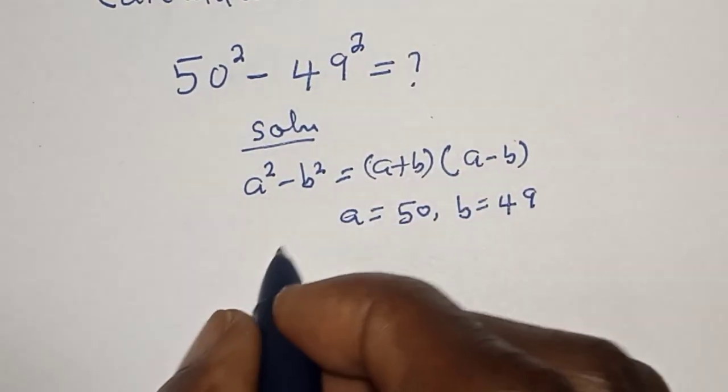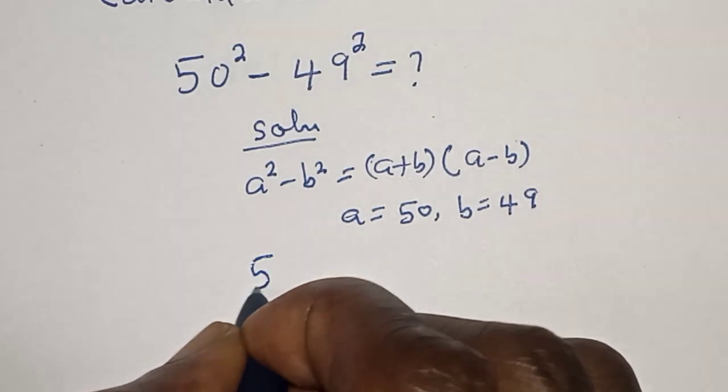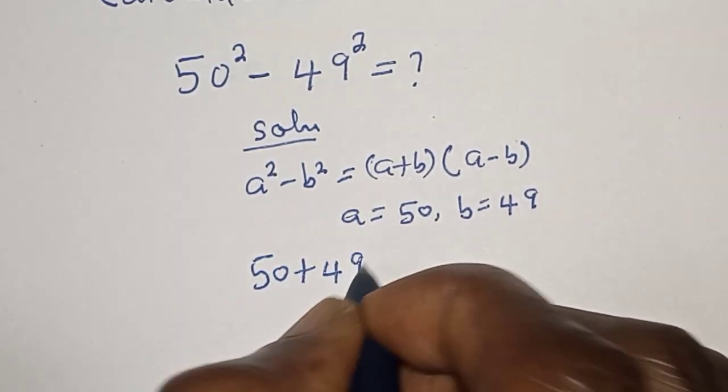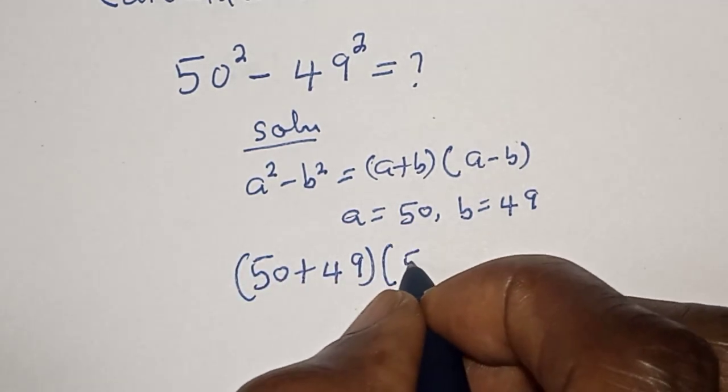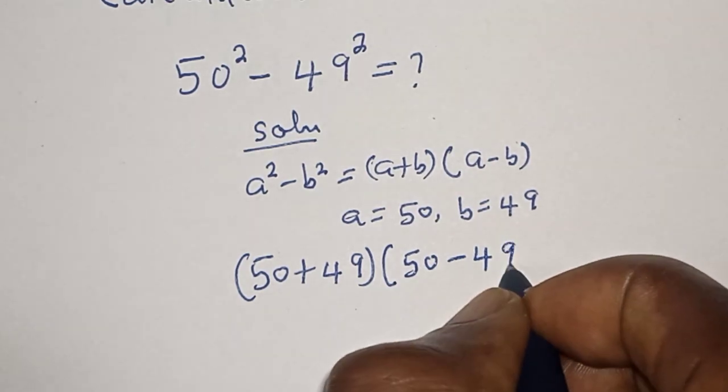So let's substitute. We have (50 + 49) multiplied by (50 - 49).